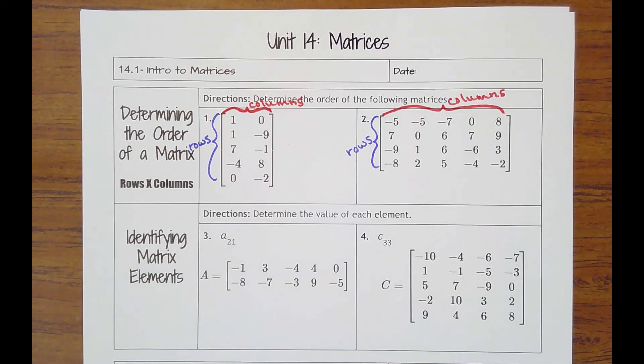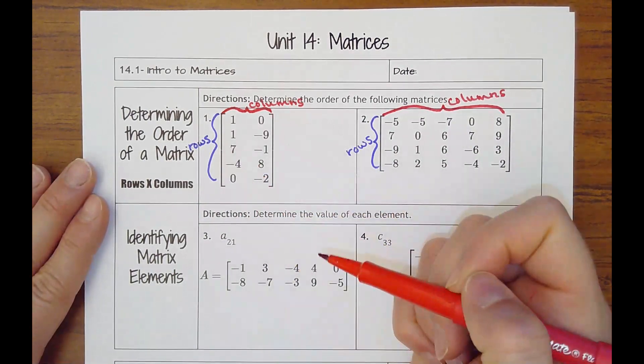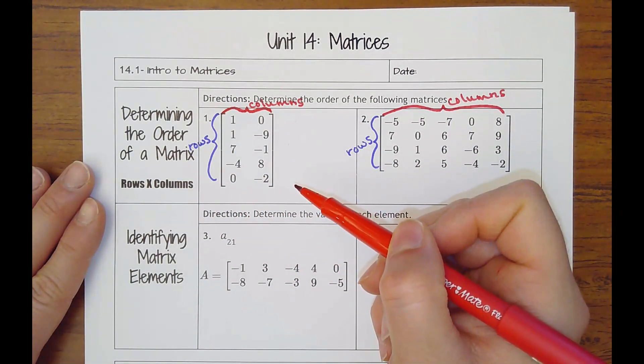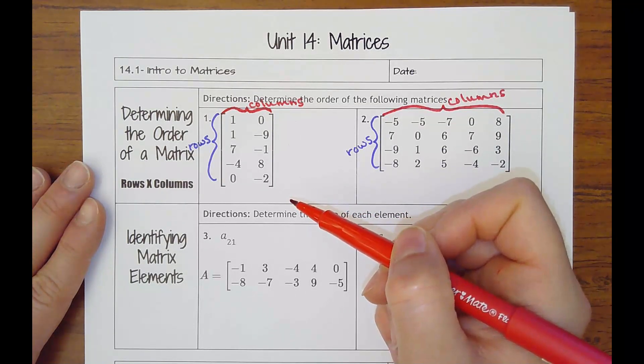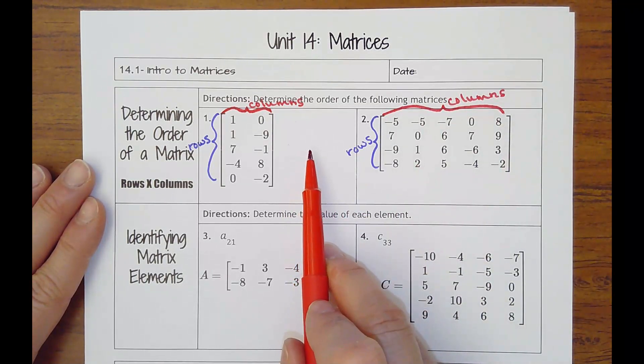Unit 14 is called Matrices, and lesson 14.1 is just a little intro to them. So what we need to know is that a matrix is going to have these brackets around it, it's going to have sets of numbers, and it could be as many rows and columns as it needs.